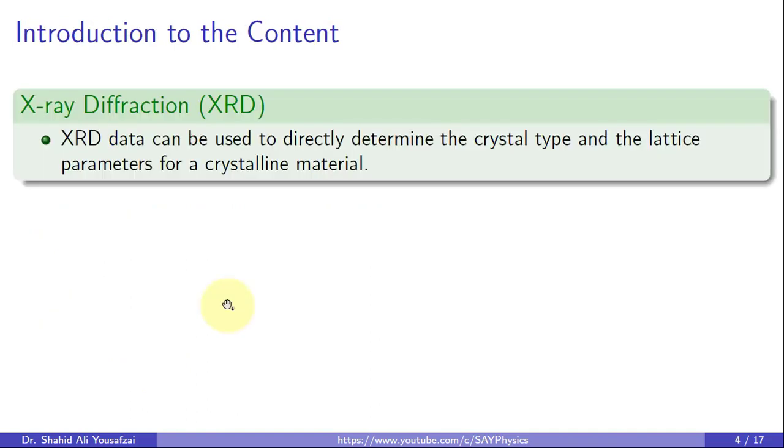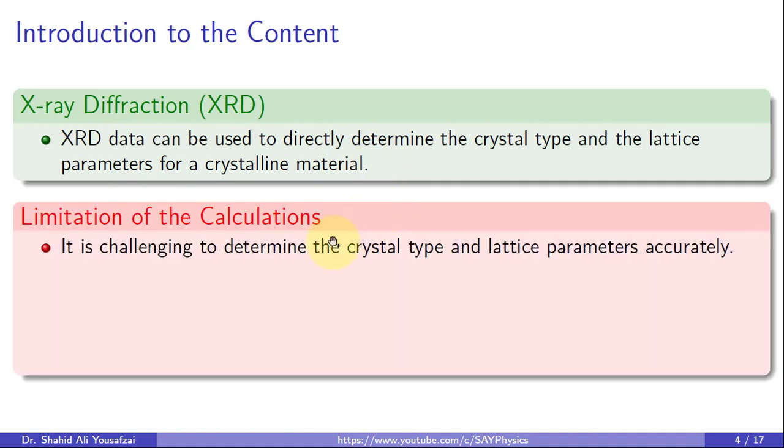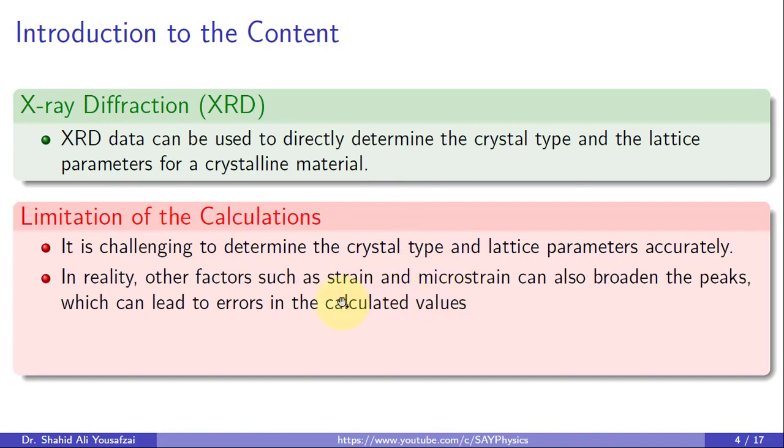Introduction. XRD data can be utilized to directly ascertain the crystal structure and its lattice parameters. However, obtaining precise results is a challenging task due to various factors, such as strain and microstrain, that can cause peak broadening and affect certain calculations, including the determination of crystallite size.